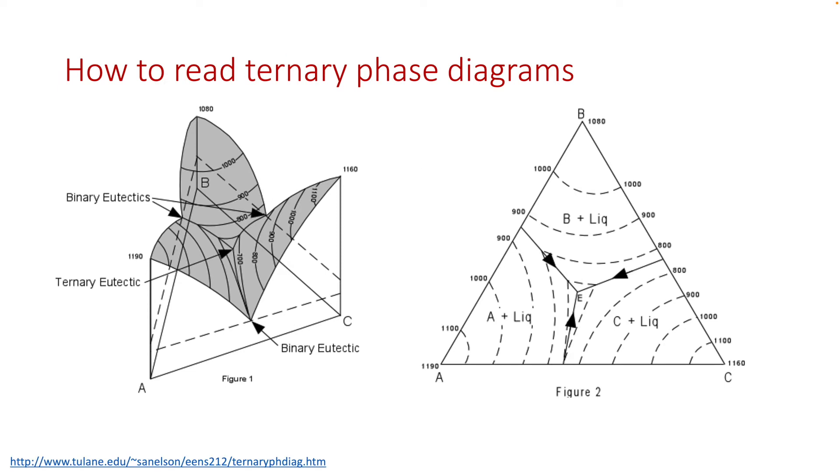Another way to present the ternary phase diagrams is by plotting the contour lines with the same temperature. In this example here, the 3D volume on the left can be projected into a 2D ternary phase diagram.